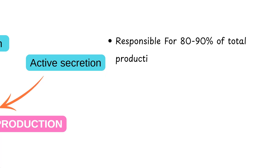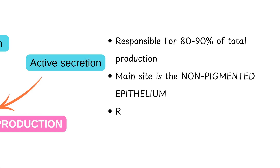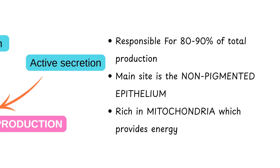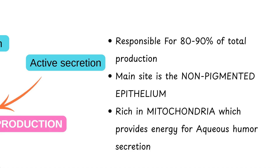80% of aqueous secretion occurs via active secretion. The main site is the non-pigmented epithelium, which is rich in mitochondria that provide energy for the production of aqueous humor.